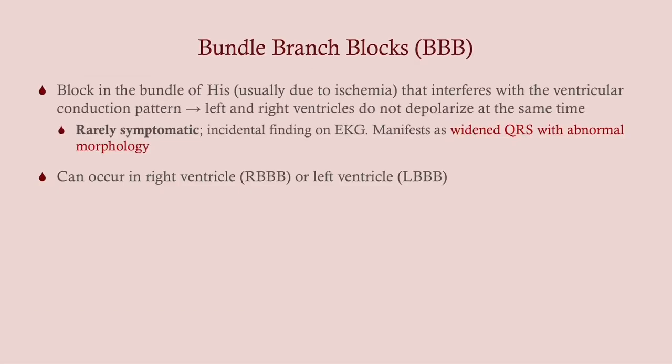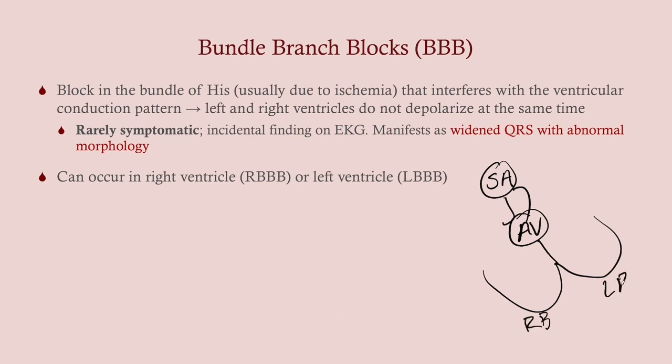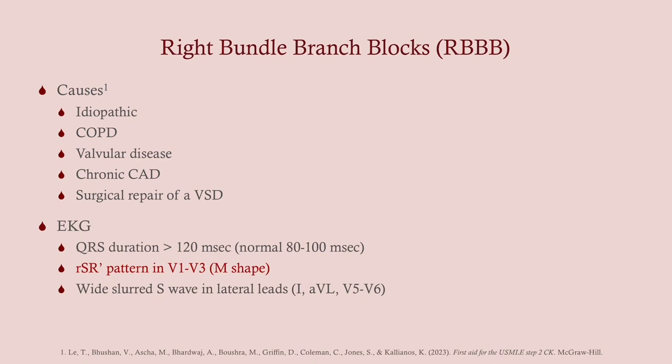Bundle branch blocks are usually a symptom rather than a disease — rarely symptomatic themselves but often reflect underlying pathology. The SA node conducts to the AV node, then through the bundle of His splitting into right and left bundles. A block on one bundle causes the right and left ventricles to depolarize at different times, producing abnormal-looking QRS complexes. Right bundle branch block is usually idiopathic but can be caused by COPD — an important one to remember — or heart disease.